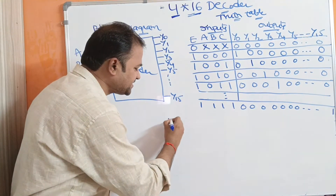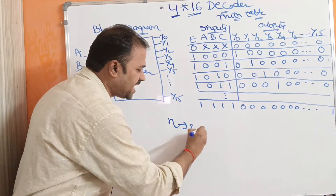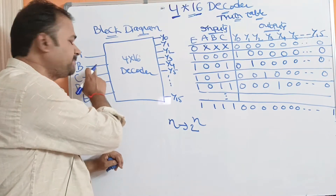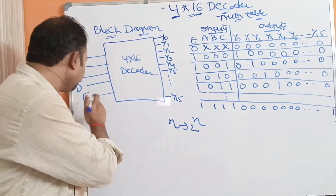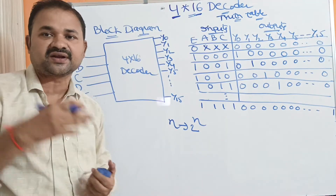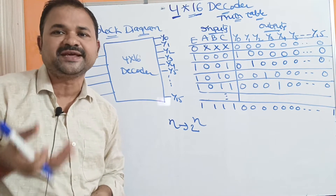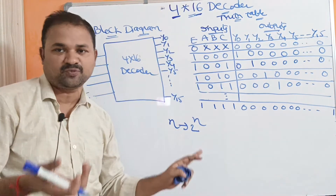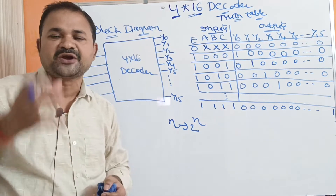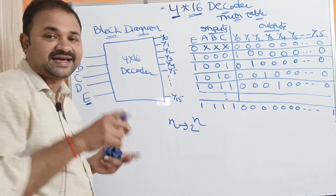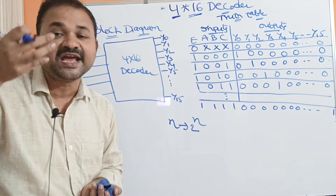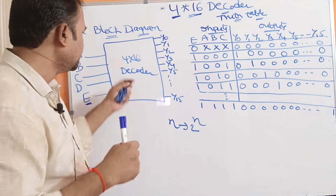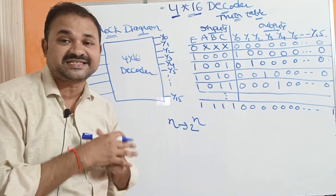We know that a decoder accepts n inputs and produces 2 to the power n outputs. Here the inputs are A, B, C, D, and we have E — the enable input. If the enable input is 0, then the decoder doesn't produce any output. The decoder produces output only when the enable input is high, that is, when the enable input is 1. And it mainly produces 16 outputs.